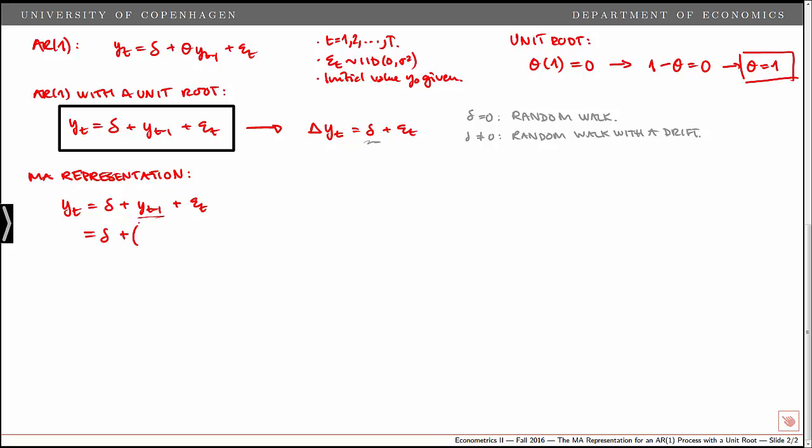First, we get a constant term, and instead of Y_{t-1}, we substitute δ + Y_{t-2} + ε_{t-1}, plus the original ε_t. Now we have 2δ, and we substitute for Y_{t-2} to get δ + Y_{t-3} + ε_{t-2}, plus ε_t + ε_{t-1}. At every point, we add δ, then add the level of the variable from the period before, plus a residual term. Continuing this process, we recursively substitute all the way back to Y_0.